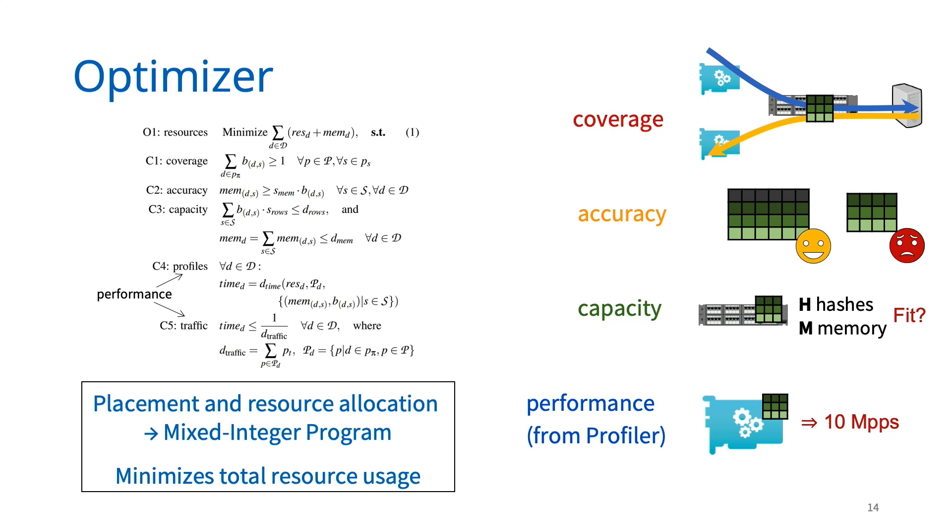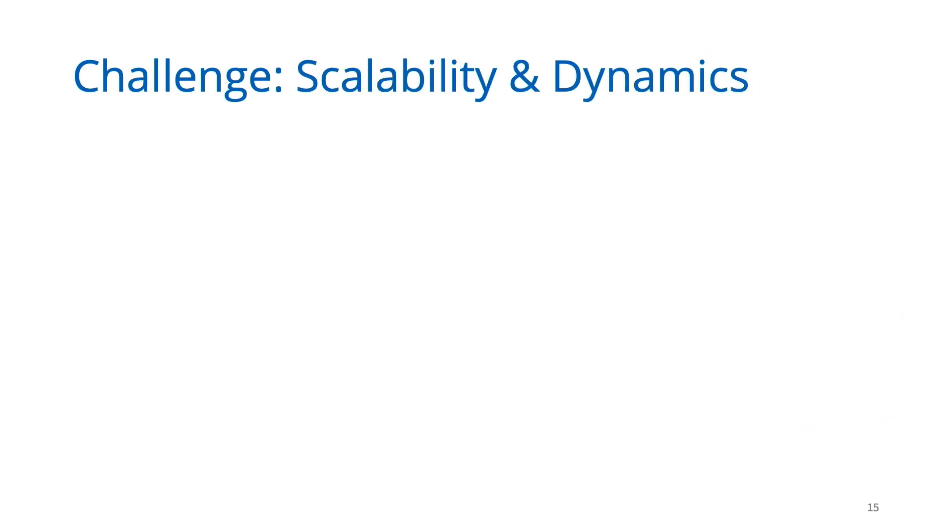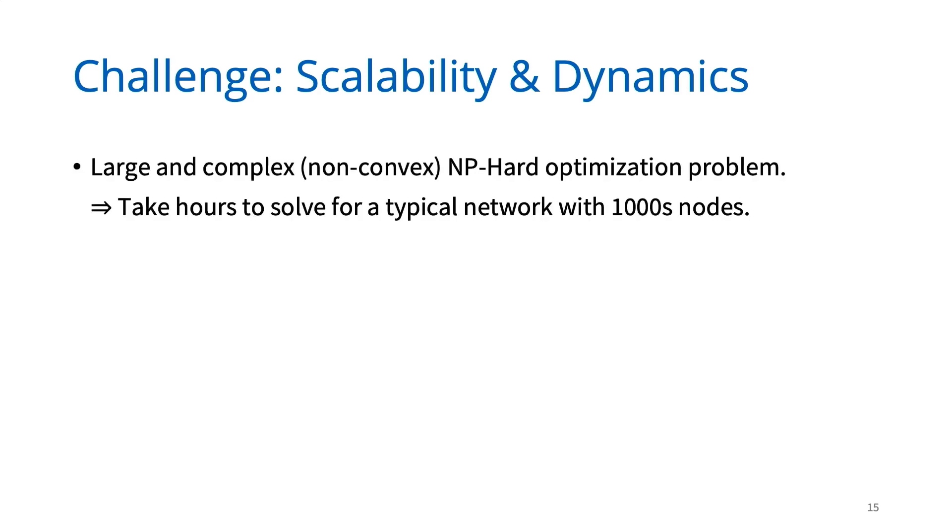We incorporate all of these constraints in a mixed integer program that minimizes the total resources used by monitoring. This formulation can be tweaked for other objectives or constraints. Unfortunately, we are not done yet. This formulation results in a large and complex NP-hard optimization problem, which can take hours to solve even with state-of-the-art solvers. Ideally, to keep up with changes in traffic, monitoring requirements, and routing, we'd like to be able to solve this optimization within a few minutes or a few seconds.